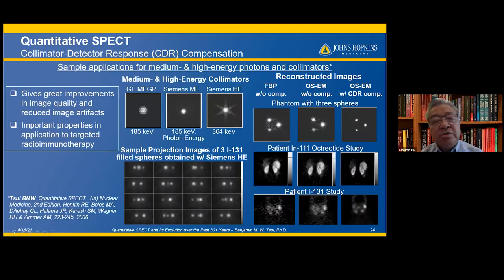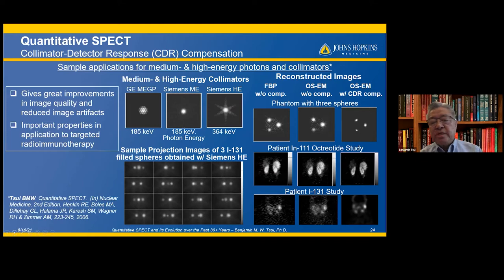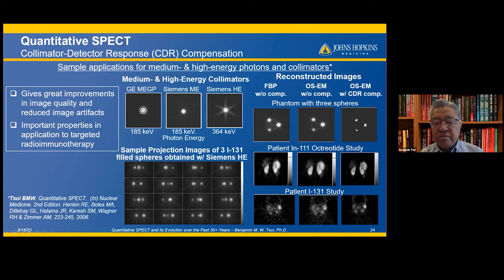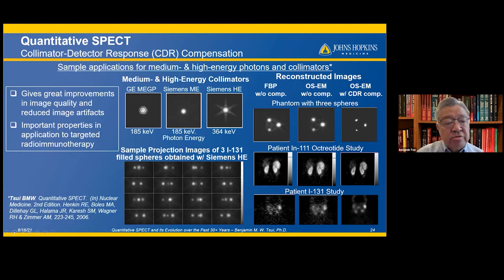For medium and high energy photons and collimators, filter back projection shows severe image artifact blurring. With accurate compensation, there is significant improvement in image quality: resolution recovery, noise reduction, and artifact reduction. This is especially important in the application to targeted radioimmunotherapy.